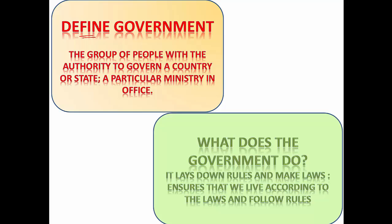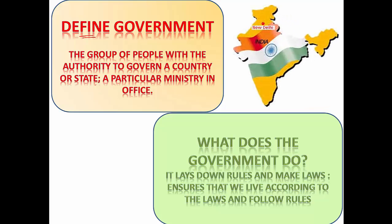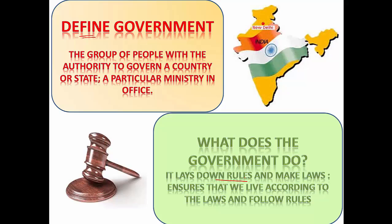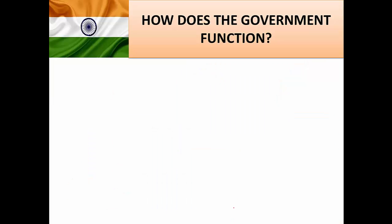The group of people with the authority to govern a country or a state, a particular ministry in office, is called a government. So what does the government do? It lays down rules and makes laws. It ensures we live according to the laws and follow rules. How does the government function?